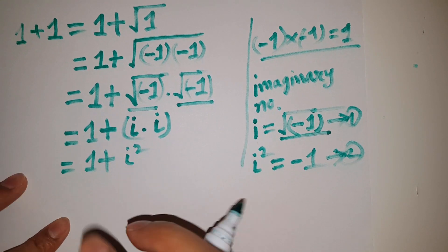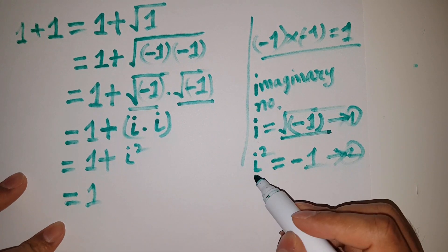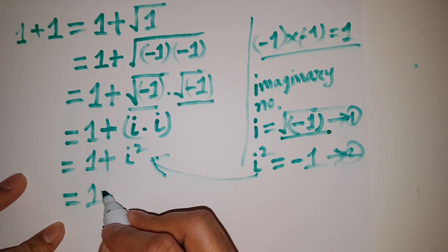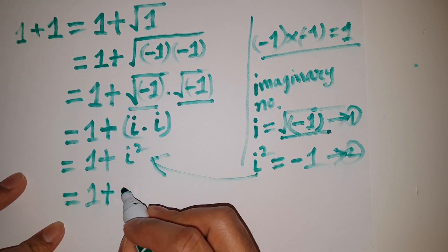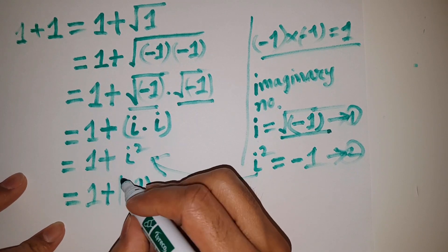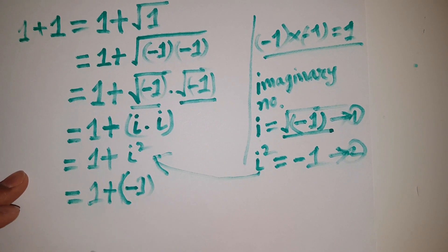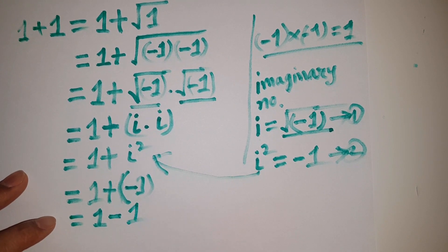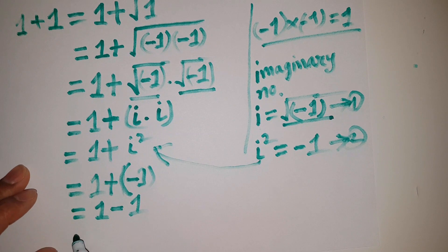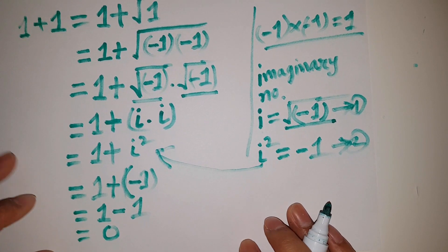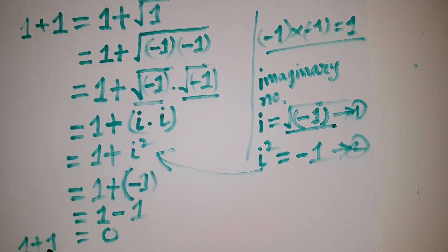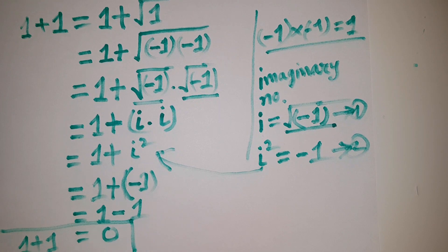So i times i is equal to i squared, and we know from this formula that i squared is equal to minus 1. So what I am getting is 1 plus minus 1. That means 1 minus 1, which is equal to 0. That means this 1 plus 1 is equal to 0. I can write finally: 1 plus 1 is equal to 0. That is what I finally proved!